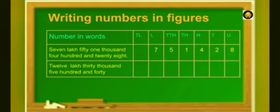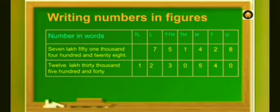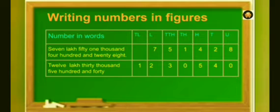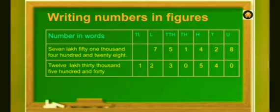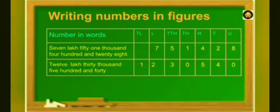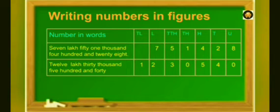Let's move to the second example: 12 lakhs, 30,540. 12 lakhs is equal to 1 ten-lakhs and 2 lakhs, so write 1 in the 10-lakhs place and 2 in the lakhs place. Then, 30,000 is equal to 3 ten-thousands. As there are no thousands, write 0 in the thousands place. As there are 500, write 5 in the hundreds place. And 40 is equal to 4 tens and 0 units, so write 4 in the tens place and 0 in the units place.